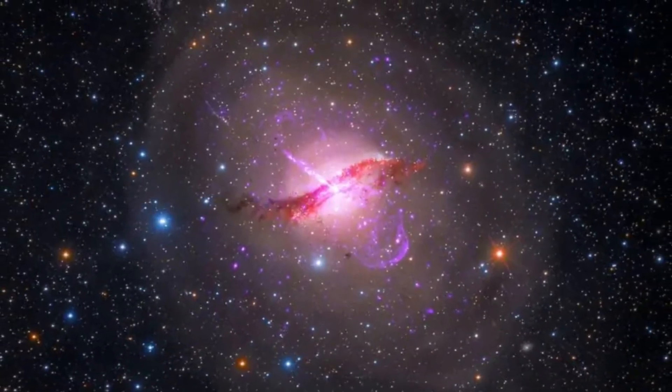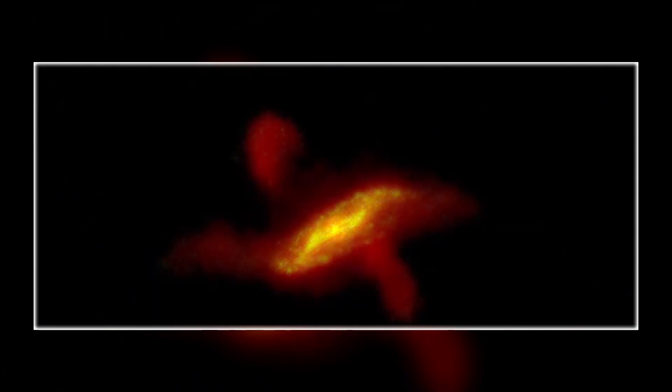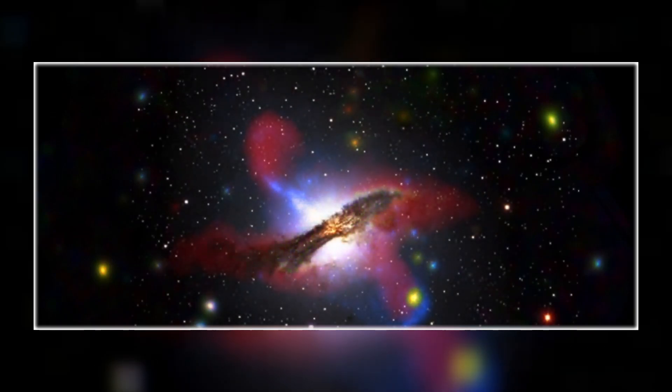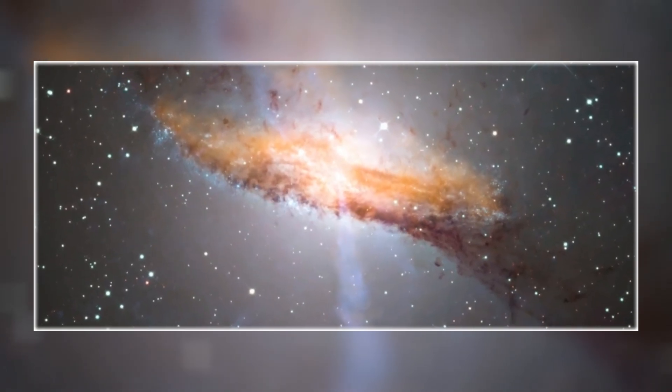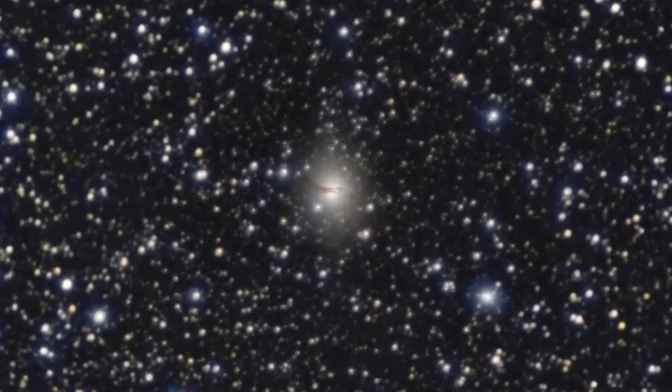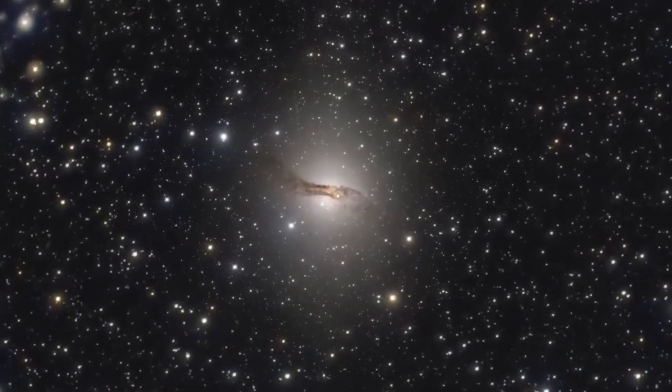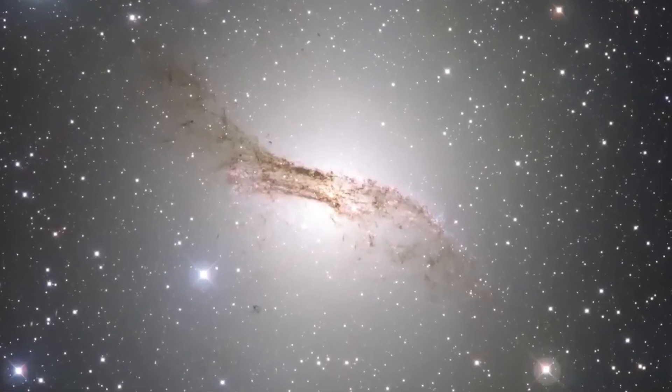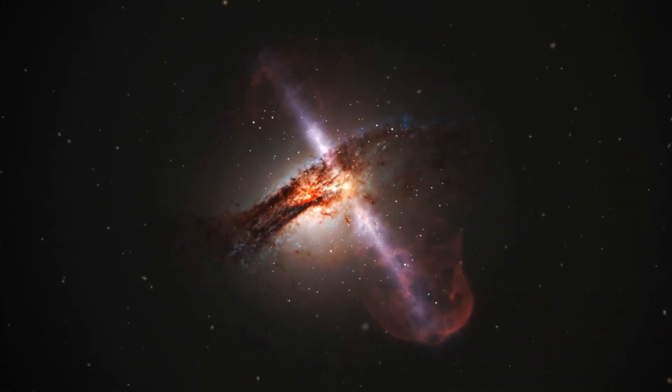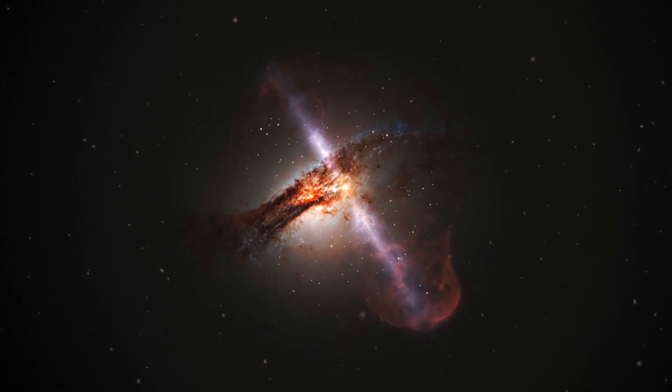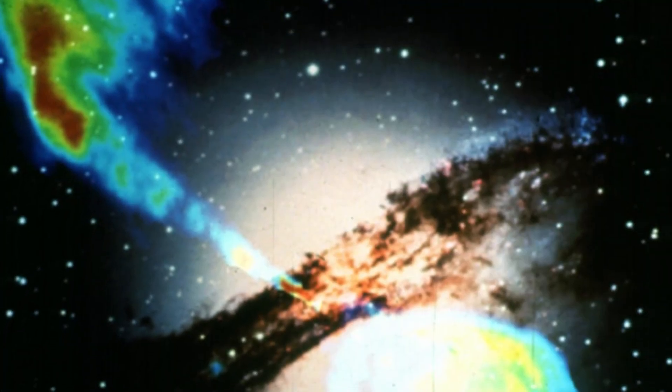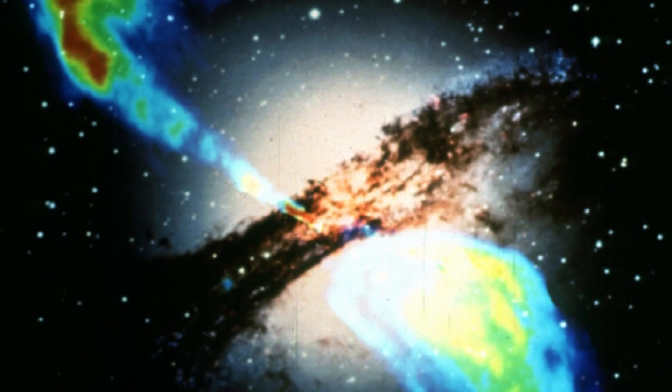A third example of galaxy collisions is the Centaurus A Galaxy, a peculiar galaxy that is about 12 million light years away from us. It is the fifth brightest galaxy in the sky with a dust lane across its middle. The galaxy resulted from a merger between a giant elliptical galaxy and a smaller spiral galaxy. The merger sparked a flurry of star formation, which is the process by which dense regions within molecular clouds in interstellar space collapse under their own gravity to form stars. It also awakened a supermassive black hole at the heart of the Centaurus A galaxy. This black hole propels jets of high-speed gas into space, generating X-rays and radio waves that stretch across thousands of light years.